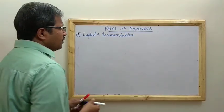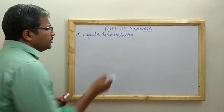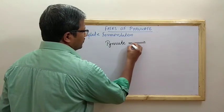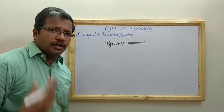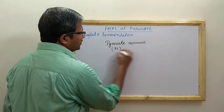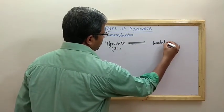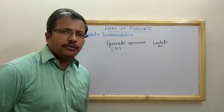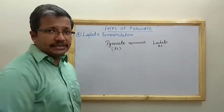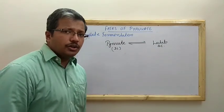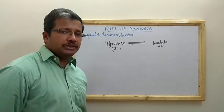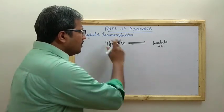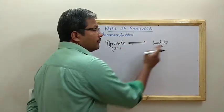In lactic acid fermentation, pyruvate is converted to lactate without the release of carbon dioxide, because pyruvate is a 3-carbon compound and lactate is also a 3-carbon compound. Pyruvate is a keto acid and lactate is a regular carboxylic acid — the C=O group becomes CHOH. So pyruvate is undergoing reduction to form lactate.